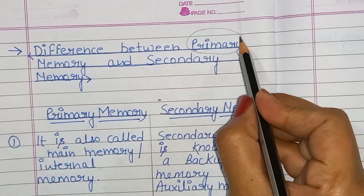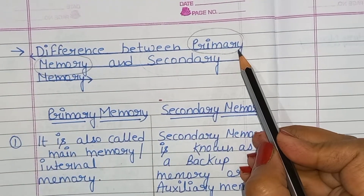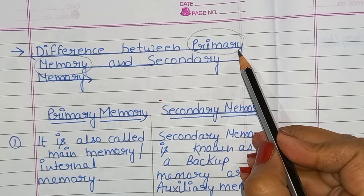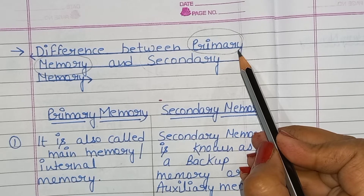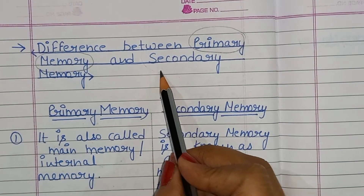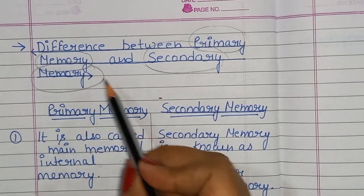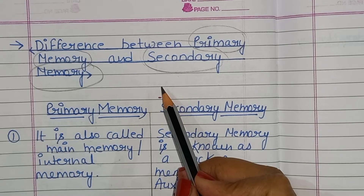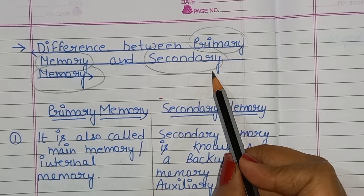Primary memory is the main memory of the computer which is used to store information temporarily. Secondary memory is referred to as external storage devices which is used to store information permanently.